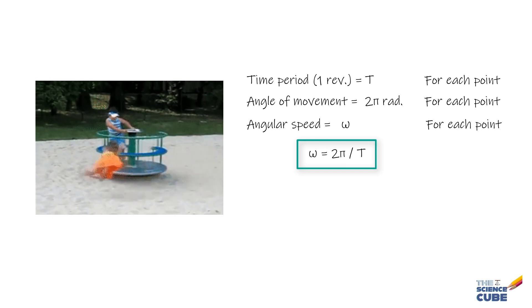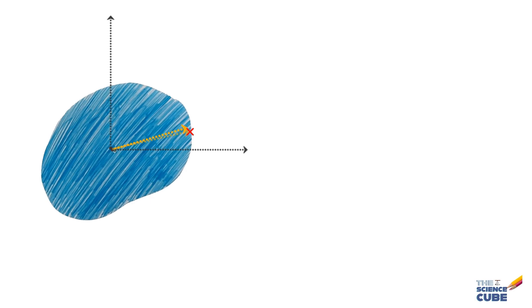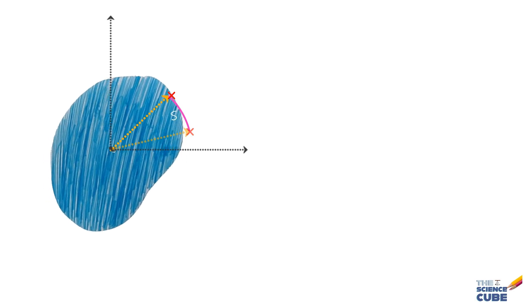With this short discussion, you would have realized that it will be useful to relate the linear variables like S, V, and A for a point in a body that is rotating to their angular cousins theta, omega, and alpha.